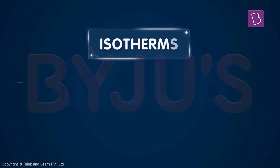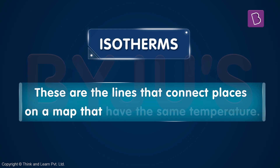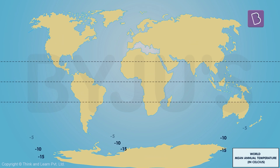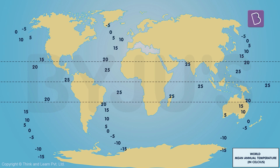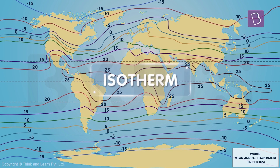What are isotherms? These are the lines that connect places on a map that have the same temperature. Let's do a small activity to understand how isotherms are drawn. This is a map of the world. The first step is to note down the temperatures of different places on the map. Next, connect the places with the same temperature on the map. Each line we get represents an isotherm.